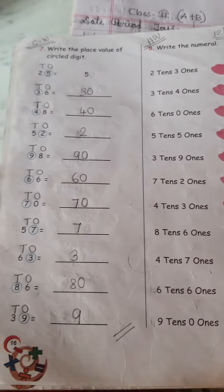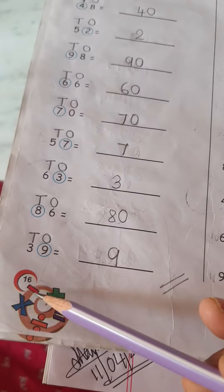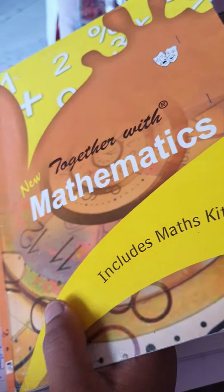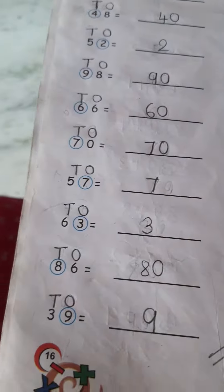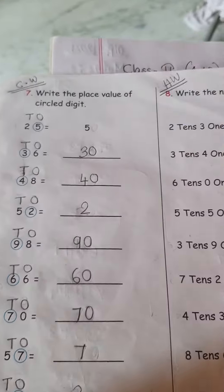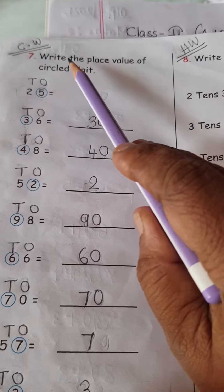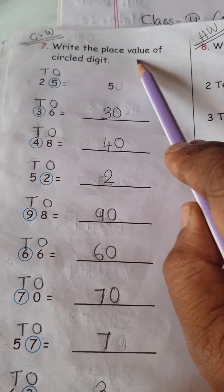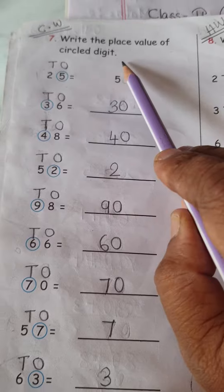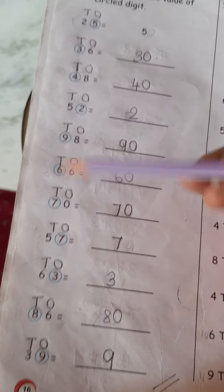So today we are going to solve page number 16. Open this book, Fat Maths book, come to page number 16. So what should we do today? Write the place value of circle digit. Many digits are there with circled, means this 5, this 3, this 4, ok?